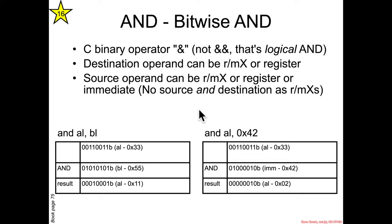As an example if we had AND AL and BL and if AL held this value 33 and BL held this value 55 the bitwise AND is basically just one at a time go one AND one that is one, one AND zero that is zero and so forth.